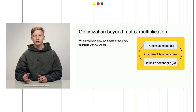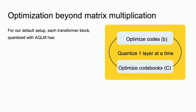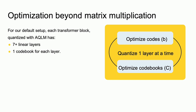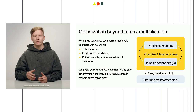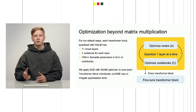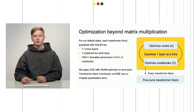For a single linear layer, we iterate codes optimization and codebooks optimization until mean square error converges. Moreover, we propose a novel technique of quantized fine-tuning for additional quantization error mitigation. If we take a look at a single transformer block, like in LLaMA 2 for example, it contains 7 linear layers. With one codebook for each linear layer in our main setup, quantized with AQLM, it now has more than 100 million trainable parameters, mostly in the form of codebooks. With that in mind, we propose to fine-tune whole transformer blocks to mitigate quantization error beyond single linear layers, applying AdamW and standard backpropagation to minimize output mean square error for multiple layers at a time.